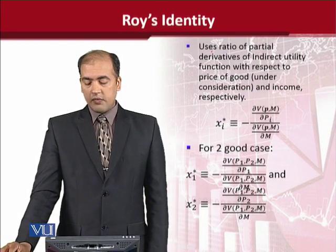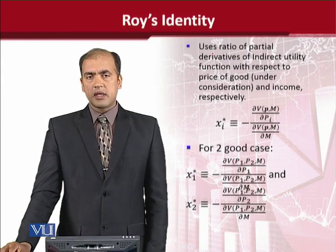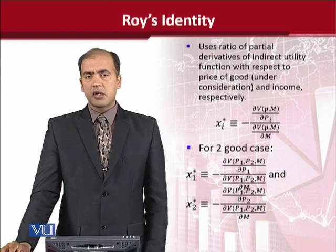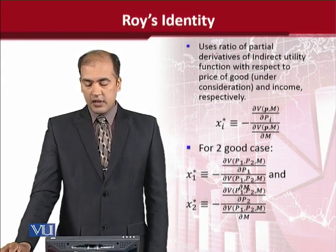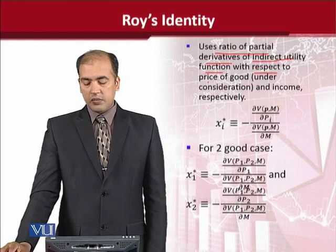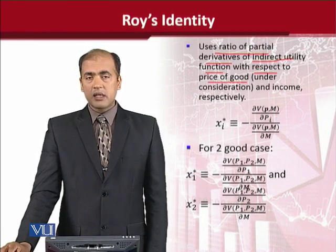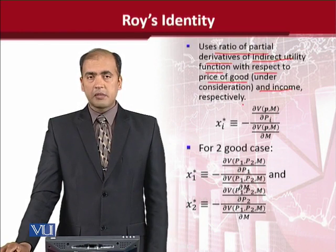Now, what Roy's identity does is to use a few derivatives — some partial derivatives in its calculations. And those are the partial derivatives of the indirect utility function with respect to the price of the good under consideration and income respectively.